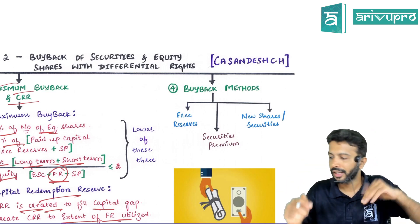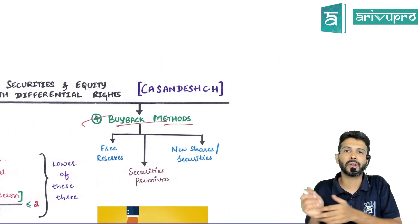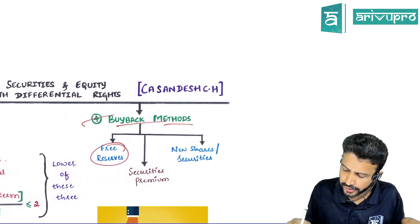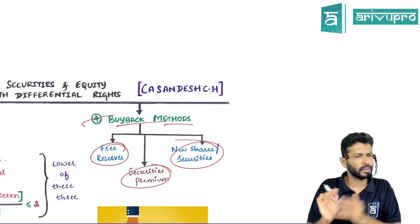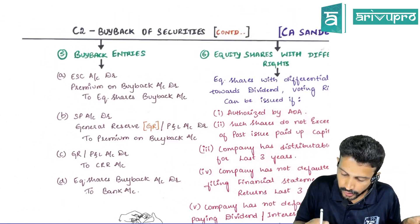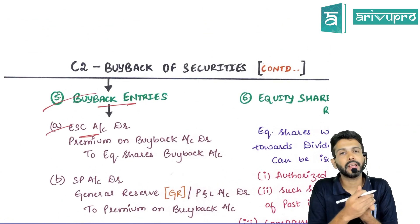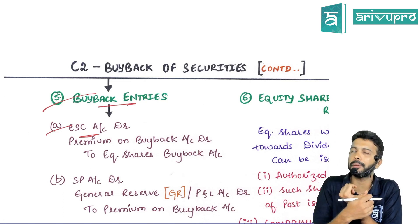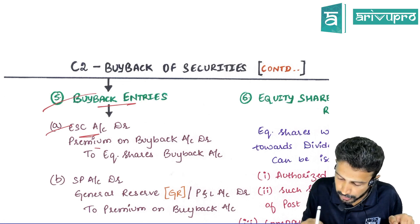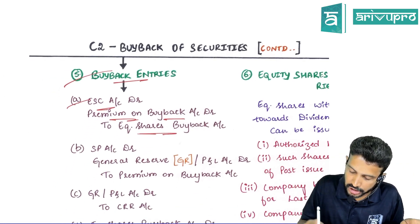There are a few methods of buyback. For class purposes we call them: profits, shares, and combination. The study material refers to them as free reserve, securities premium, and new shares — but you can simply treat it as profit, shares, and combination. The buyback journal entries: first, debit Equity Share Capital account. If shares are bought back at a premium, that premium is a loss, so debit Premium on Buyback account and credit Equity Share Buyback account.